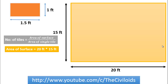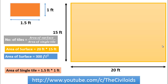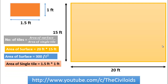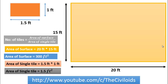Area of the surface can be determined by multiplying its length by its width, which is 20 feet multiplied by 15 feet. After calculation, we will get 300 square feet. Now, the area of the single tile can be determined by multiplying its dimensions, which is 1.5 feet multiplied by 1 foot. We will get the area of a single tile as 1.5 square feet.